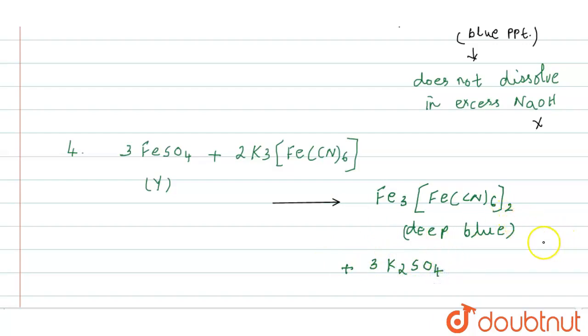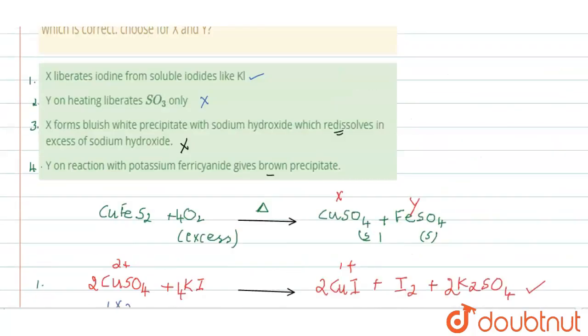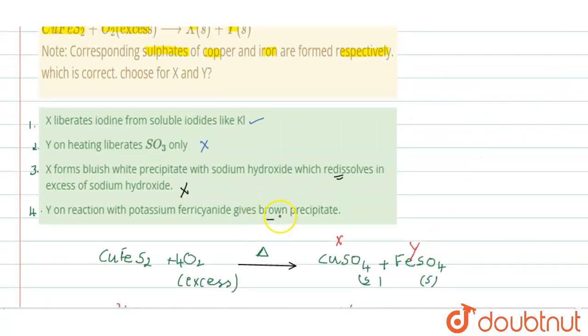So therefore, this is also wrong because in the statement it is mentioned as brown colour, brown precipitate, which is also wrong. It is a blue precipitate which is formed. So now we know that among these four, only the first option is the correct option, and that is the first option is the correct answer.